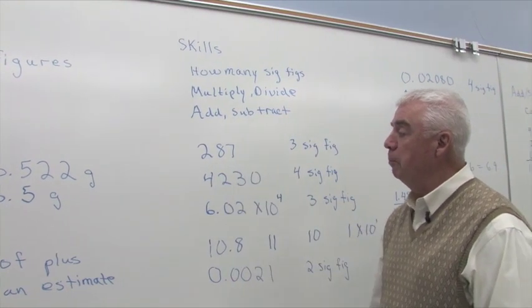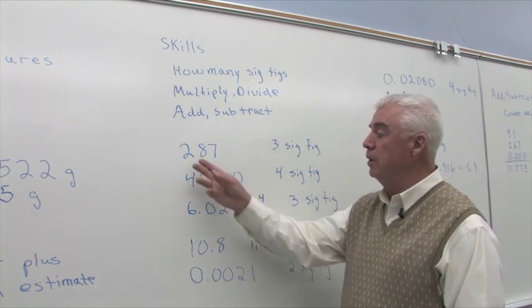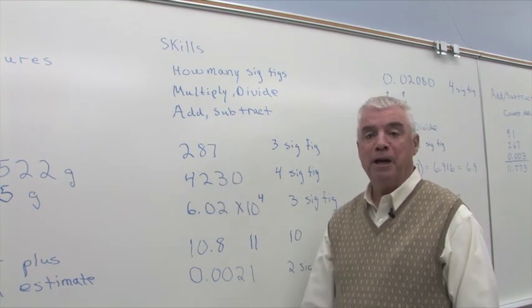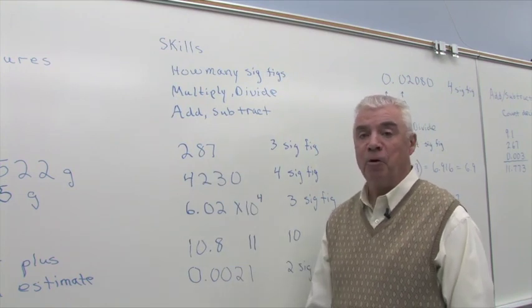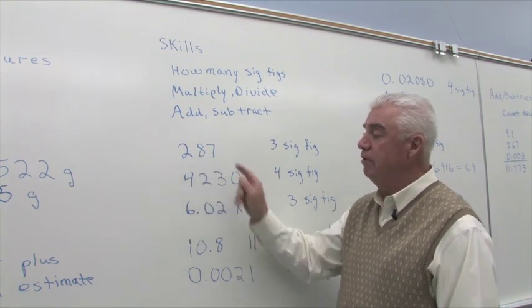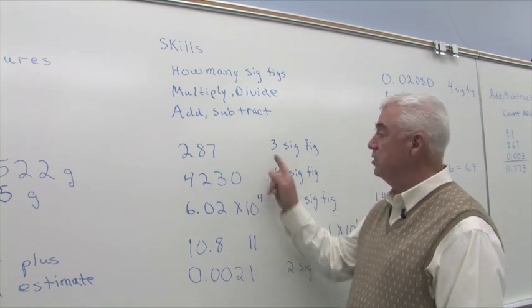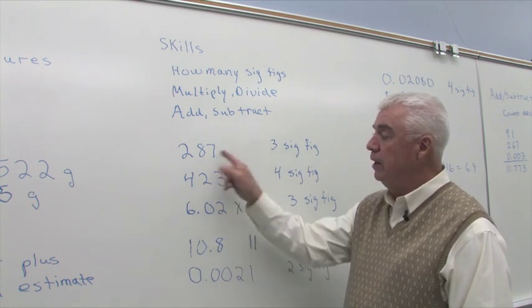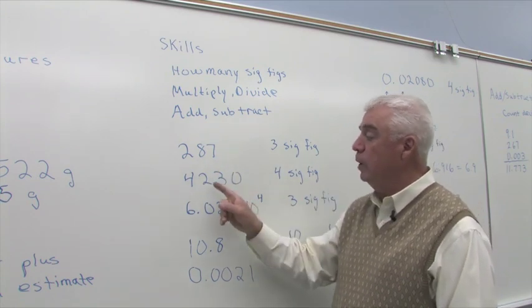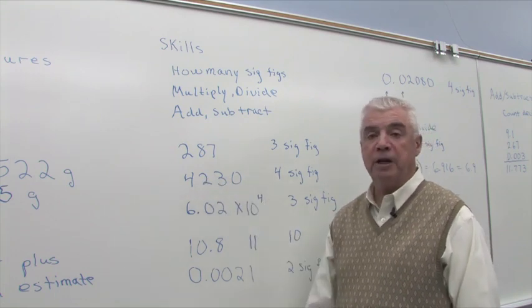Let's just look at some numbers first of all. If you were given the number 287, and we'll assume that whoever collected or reported that number followed manufacturer's recommendations and is reporting meaningful numbers. Well, each of these digits then would be considered significant, and so we'd have three significant figures. And really, the only question that comes into play is, when is a zero significant?